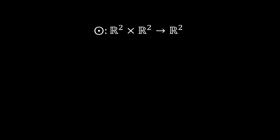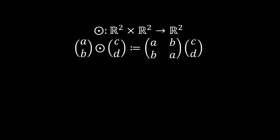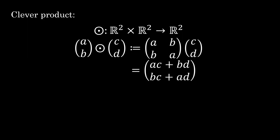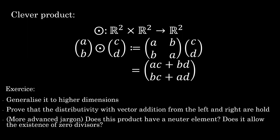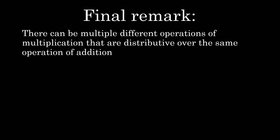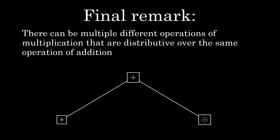Here's another one, a bit more creative. We take the vectors (a,b) and (c,d) from ℝ². We can rewrite the vector (a,b) as the matrix [[a,b],[b,a]], and then just do a regular matrix product. Let's call it the clever product. Can you guess how I would define it in dimension n? Finally, note that generally there can be multiple different operations of multiplication that are distributive over the same operation of addition — the direct and clever product are both distributive over the usual vector addition, for example. Can you come up with another one?